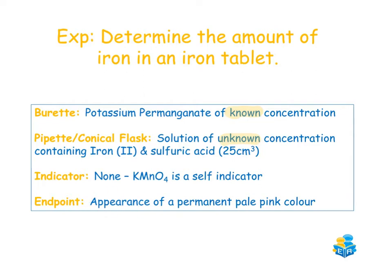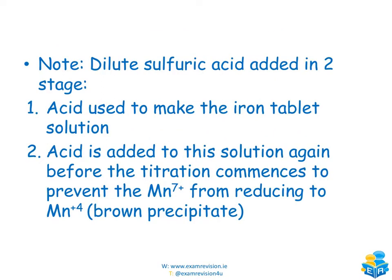The endpoint is the appearance of a permanent pale pink color. To make our solution containing iron(II) sulfate, the iron tablets need to be weighed out on a balance, crushed and ground using a pestle and mortar with some dilute sulfuric acid, then transferred into a volumetric flask and made up to the required volume. The titration then proceeds as normal, as with our titration of ammonium iron and potassium permanganate.